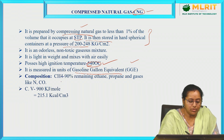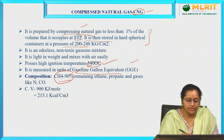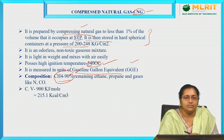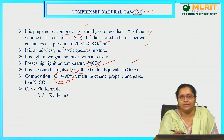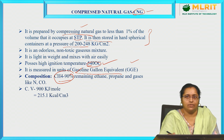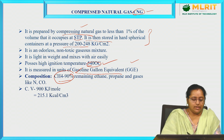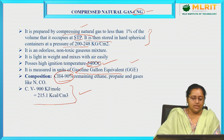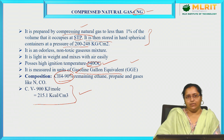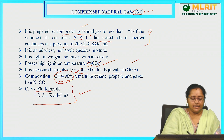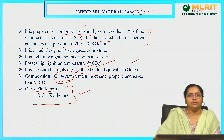Coming to CNG's composition, it contains 90 percent methane as its major constituent. The remaining portion is a mixture of ethane, propane, and gases like nitrogen and carbon monoxide. It produces a calorific value of 215.1 kilocalories per centimeter cube, or 900 kilojoules per mole.